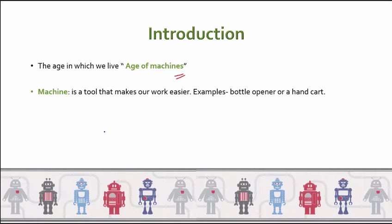So what is a machine? A machine is a tool that makes our work easier. Whatever work you do, if there is something that is making it easier, it is a machine. For example, a bottle opener makes it easier for us to open soft drink bottles, and a hand cart which we use in supermarkets to pick up things.